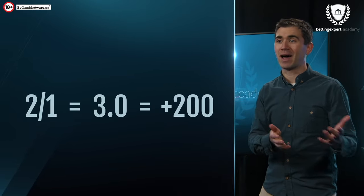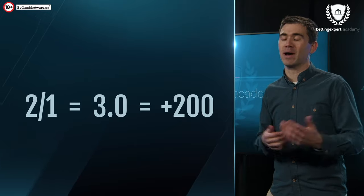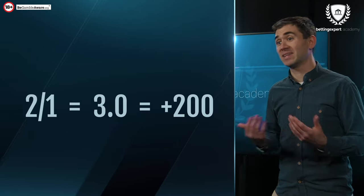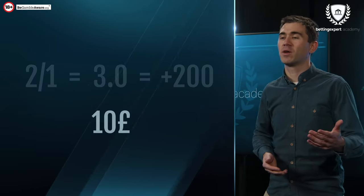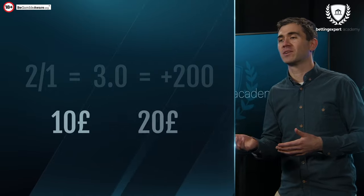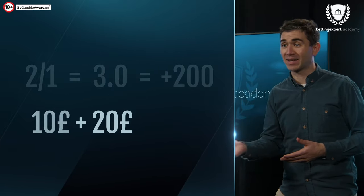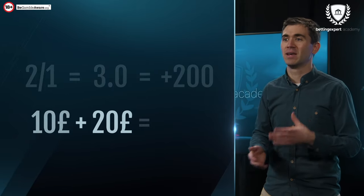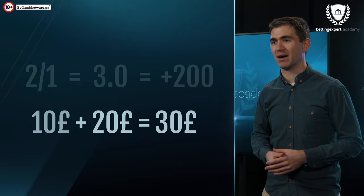Stake a certain amount and you'll get a certain amount back if your bet wins. In this case, if I bet 10 pounds at two to one, 3.0, or plus 200, I'd win 20 pound profit and get my stake back, giving a return of 30 pounds.